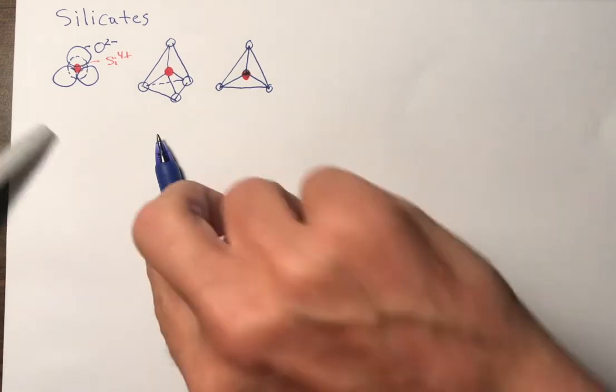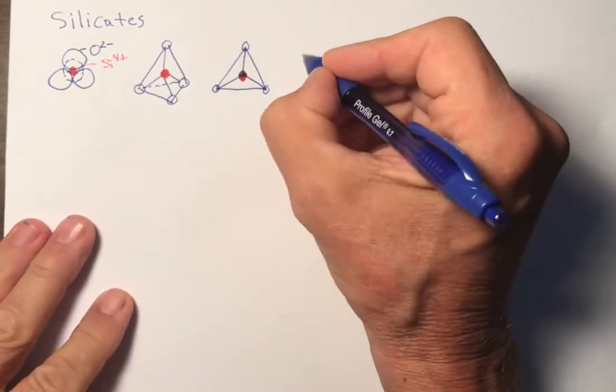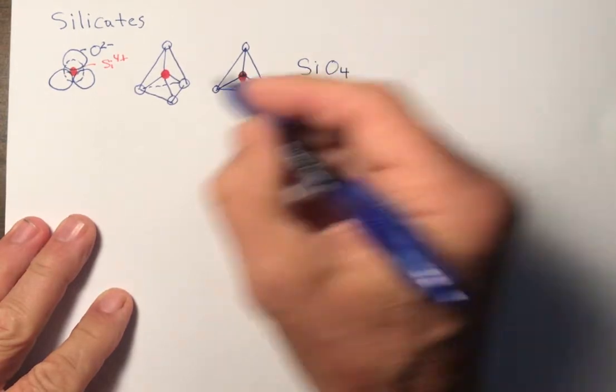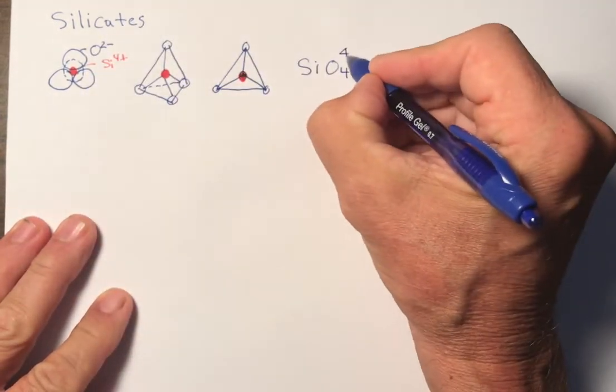So the basic stoichiometry of the silicon tetrahedron is SiO4. And if you add up the charges, this would be a four minus.